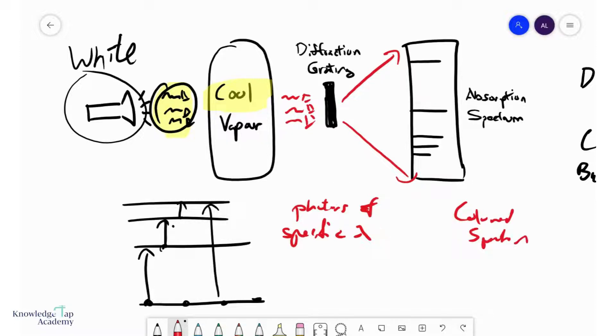These dark lines correspond to the wavelengths of the photons that got absorbed, which are unique because they must correspond to these energy gaps. Therefore, by studying the absorption spectrum, we'll be able to identify what the energy levels are.